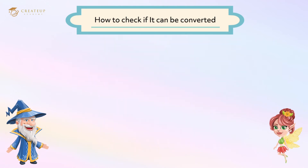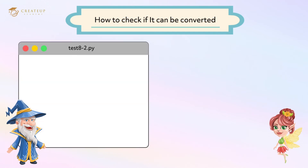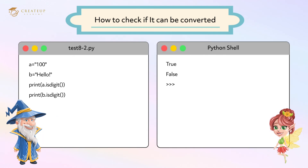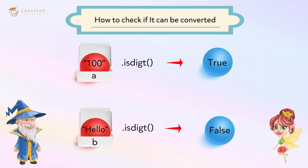That's right. Let's try it out and see if we can convert the strings '100' and 'hello'. Create a new file in IDLE and write the code like this. Save and then run it. It turns out that the string '100' can be converted to an integer and the string 'hello' cannot be converted.